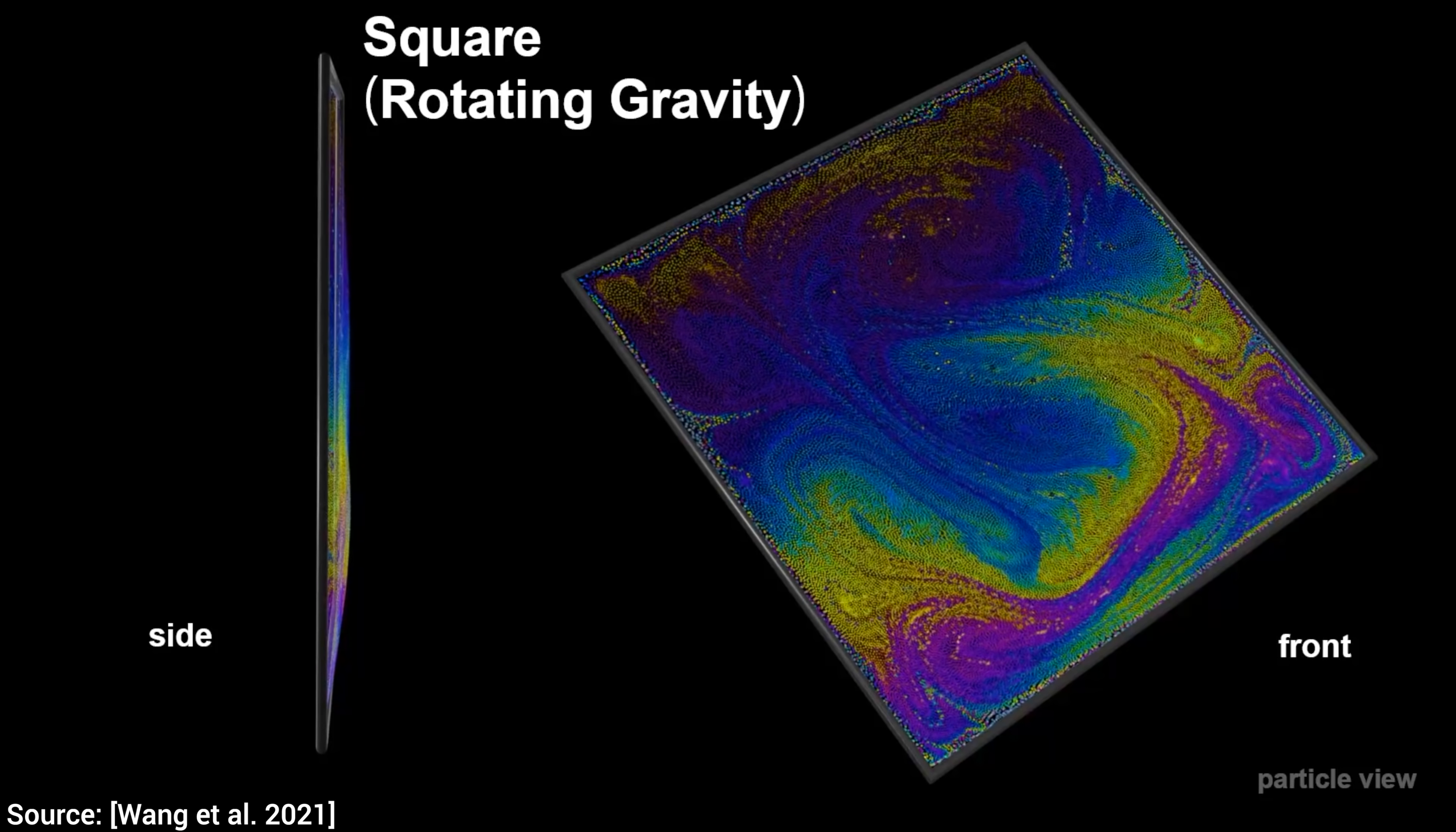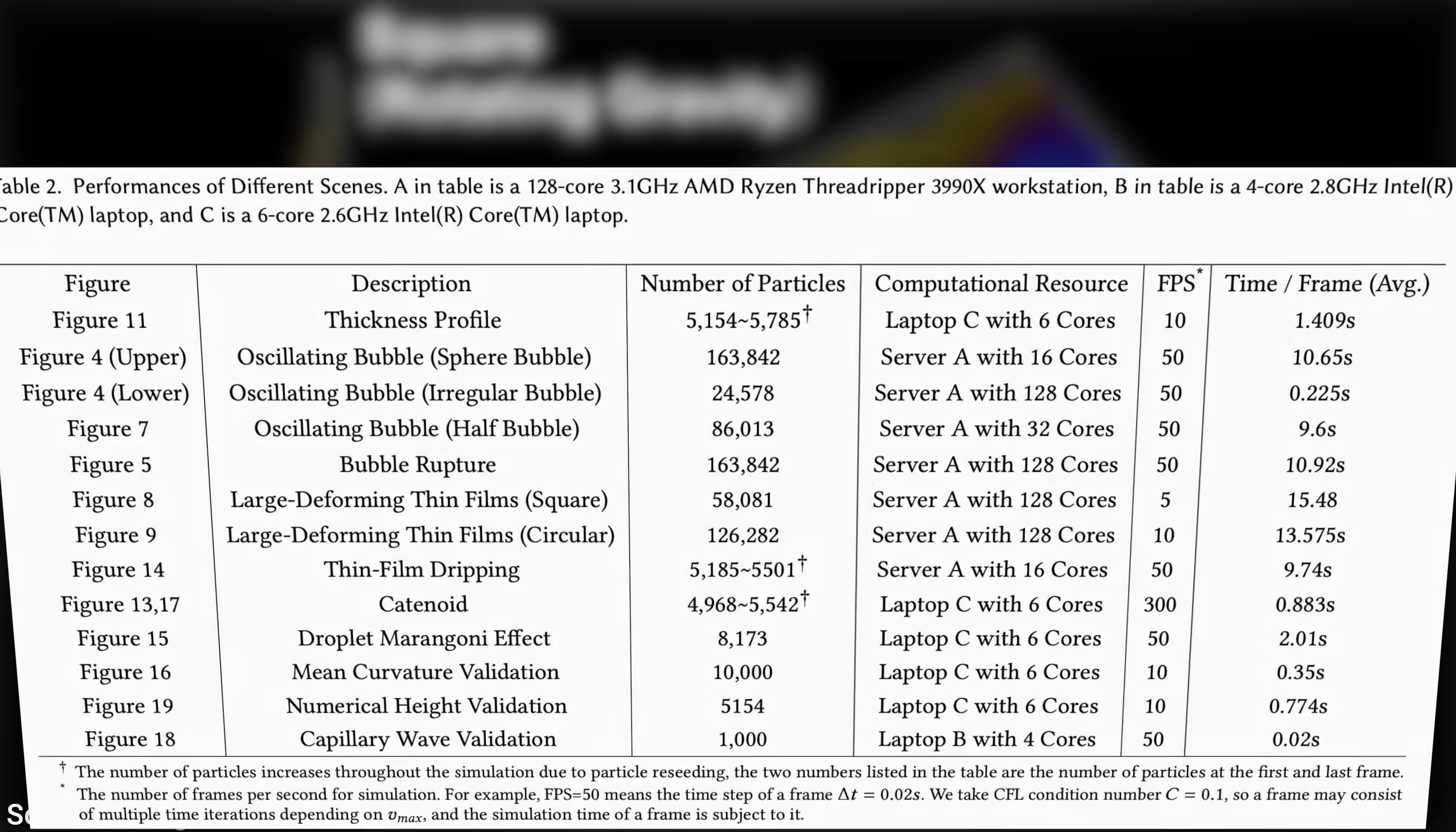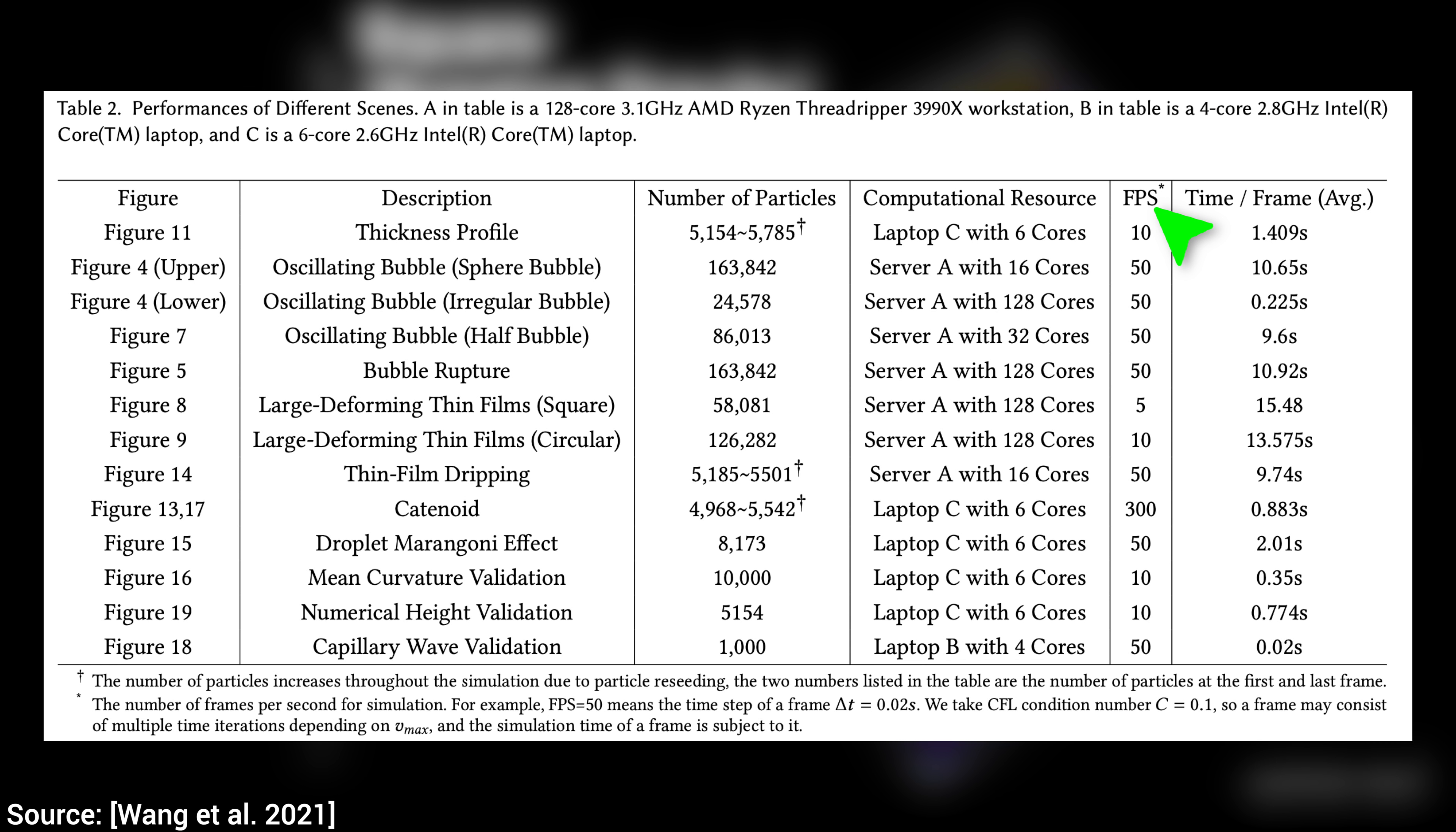So, how quickly can we perform all this? Disregard the FPS, this is the inverse of the time step size, and is mainly information for fellow researchers. For now, gaze upon the time per frame column, and…my goodness, this is blazing fast too. It takes less than a second per frame for the catenoid experiment, this is one of the cheaper ones. And all this on a laptop. Wow!